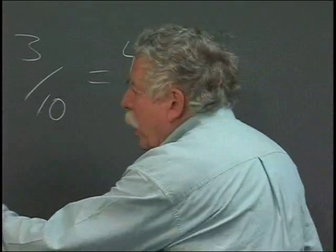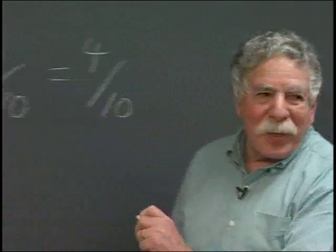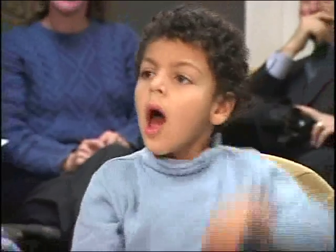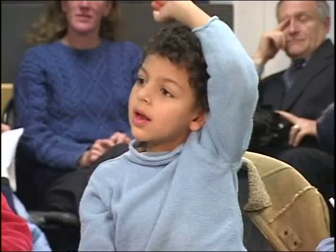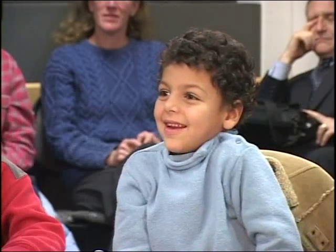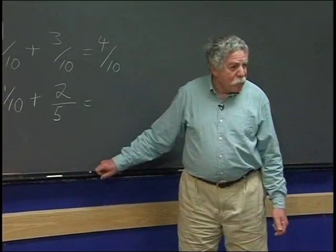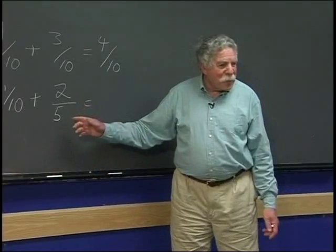What about 1/10 plus 2/5? A student named Amir says he knows how to add that. The teacher asks how. Amir explains: because you can just change them, since 5 plus 5 equals 10. So you can turn it into that and add the tops. The teacher invites Amir to explain what to do.